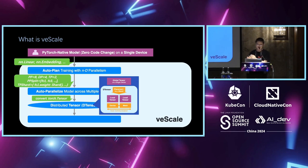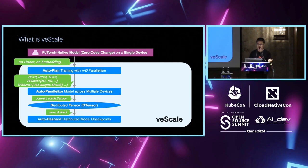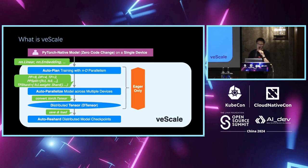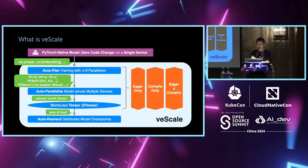The great thing about D-Tensor is that a lot of communication can be represented as resharding the D-Tensor, which is very intuitive and convenient for implementing TP and distributed checkpoint resharding. All V-Scale execution supports eager mode, compiled mode, and a mixture of both. In compile mode, users can transform their module into an FX graph, enabling extra optimizations such as replacing subgraphs with already-available fused kernels.